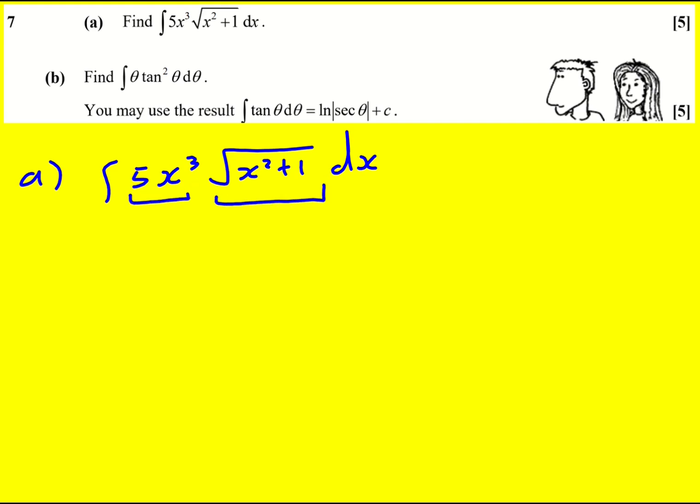Not sure if it's going to work out even. If you do this as u and this as v dash then the v is going to get more complicated so what this is kind of tending towards is a substitution. Let's try and simplify this thing inside the root to see what happens.